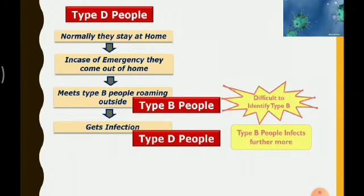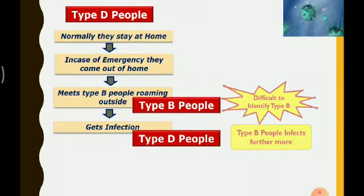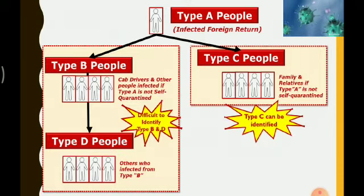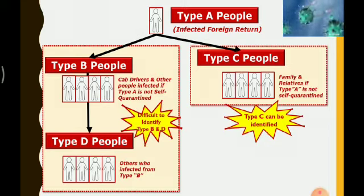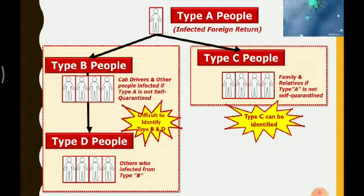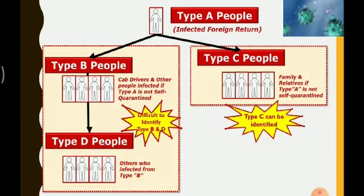Type D people are also very difficult to identify. Type B people keep on infecting Type D people, so identifying both B and D is a major task. Types A and C can be quarantined. That is why the government has given a 21-day lockdown — if you stay at home, Type B and D people can be more easily identified.